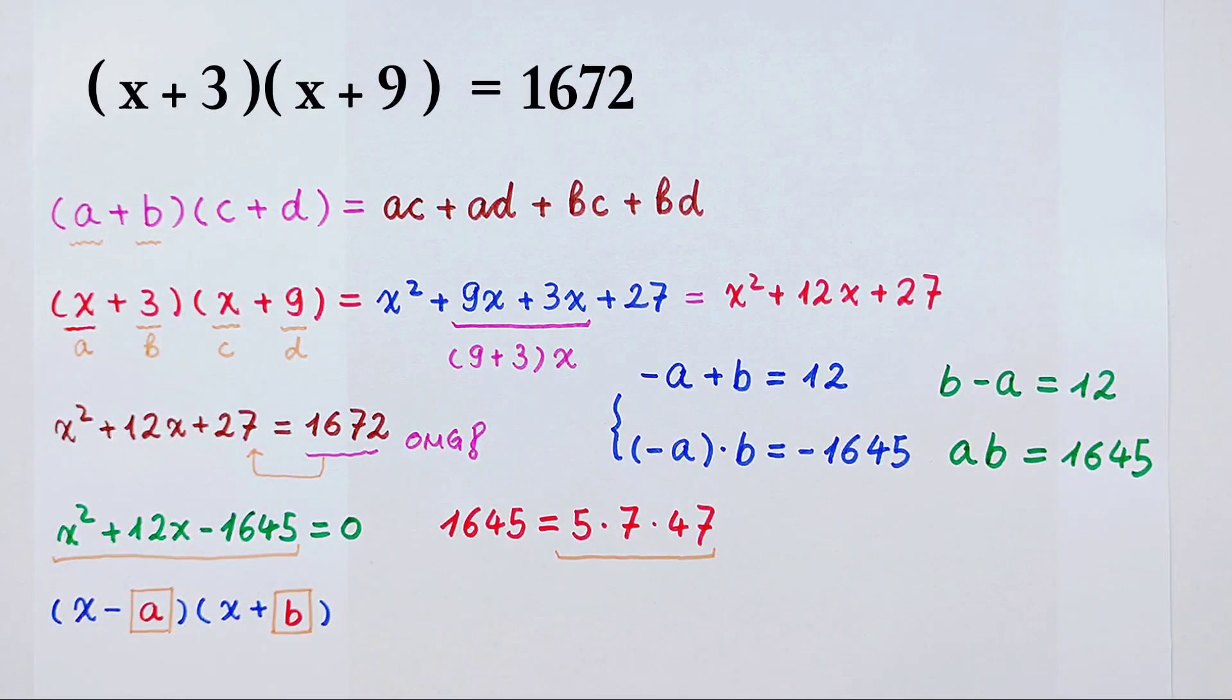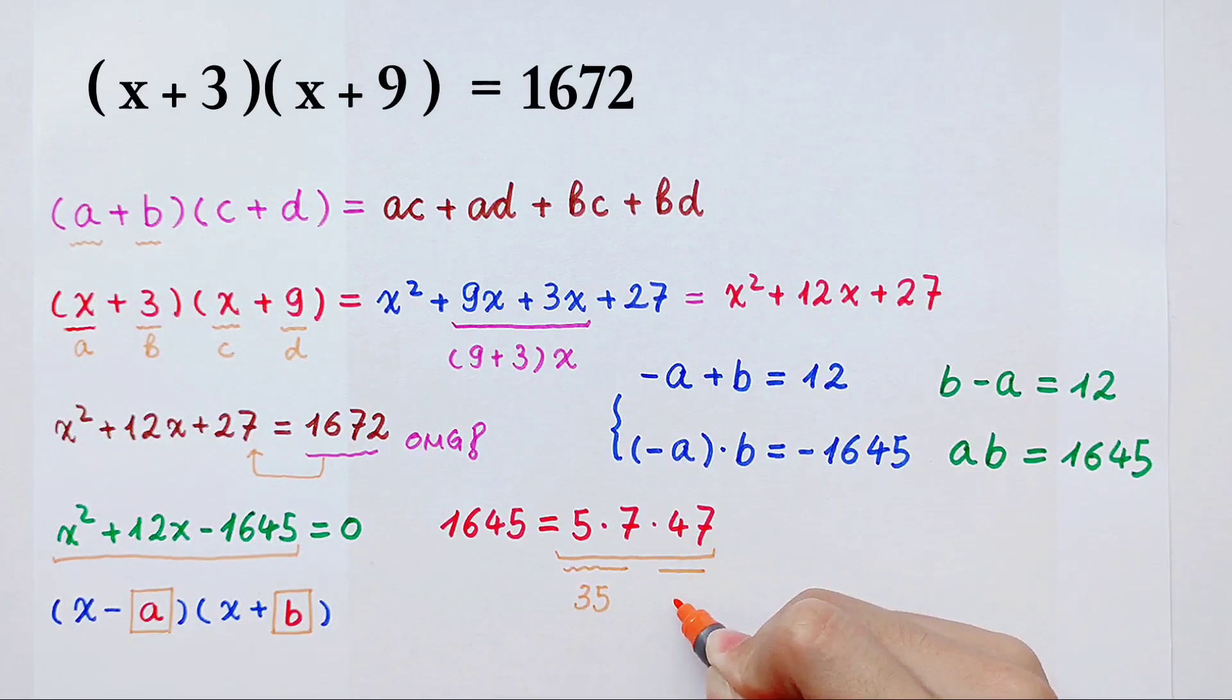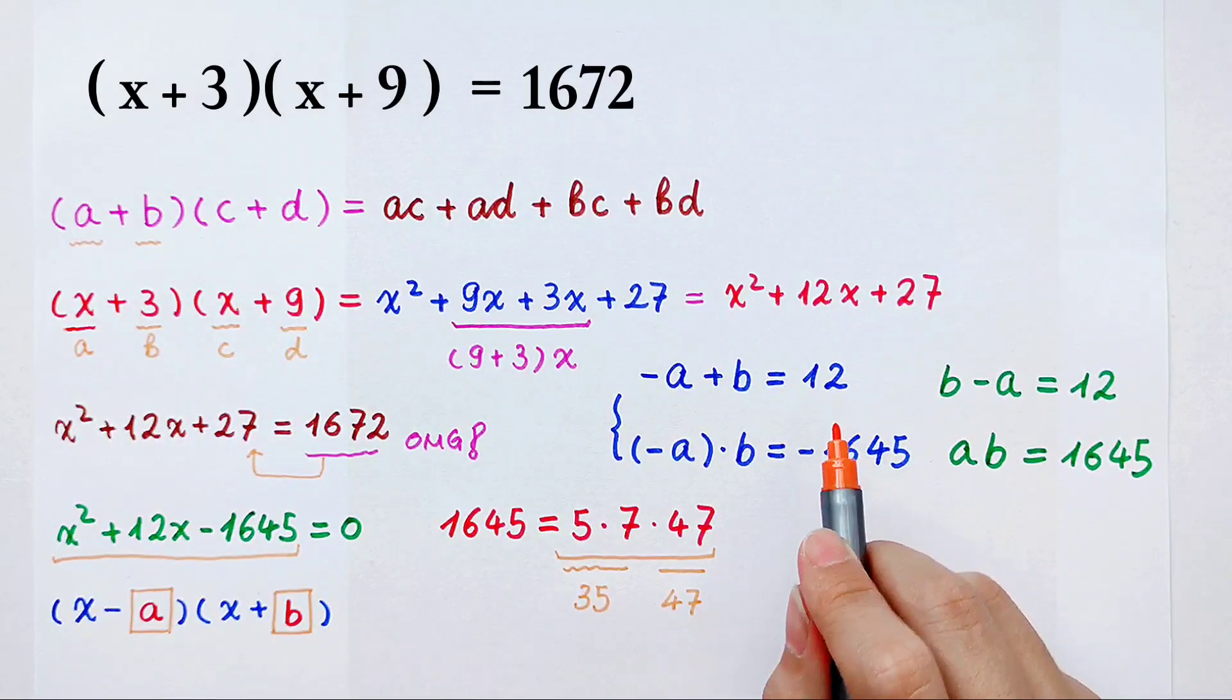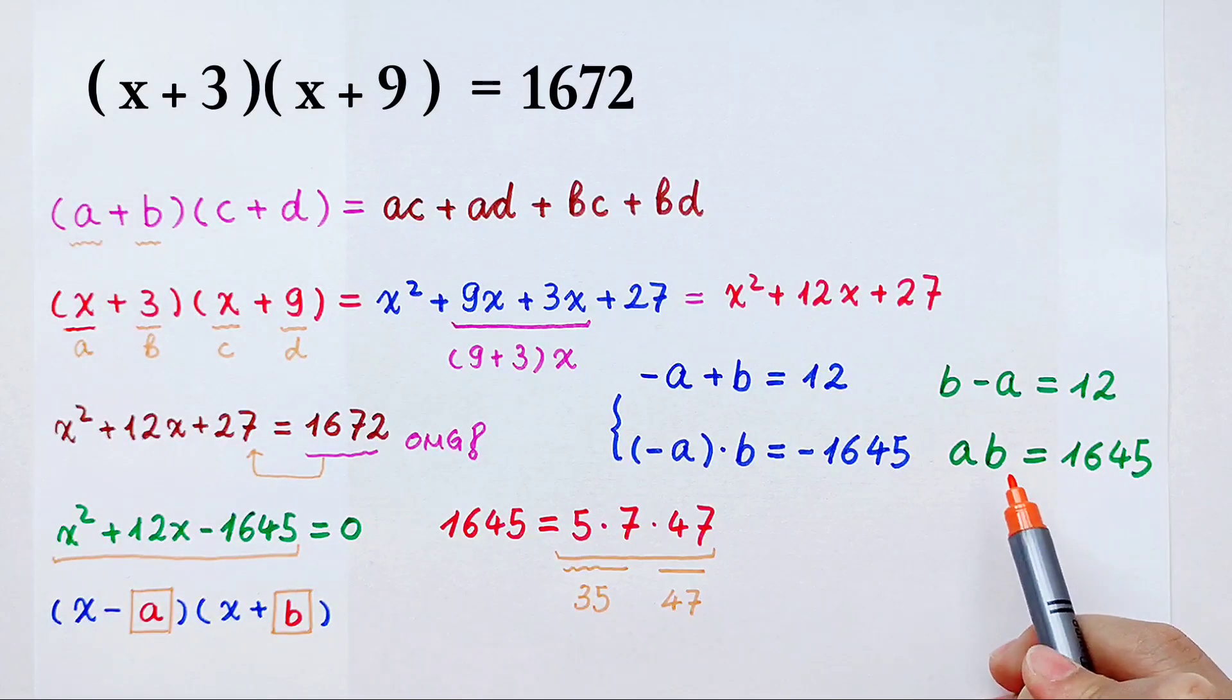Because we've noticed that 5 times 7 is 35. And 47 is 47. 47 minus 35, it is 12, isn't it? So now I have figured out what a and b are.